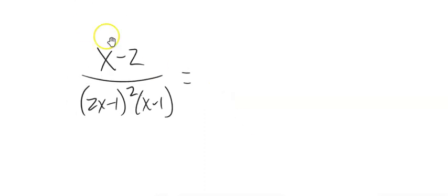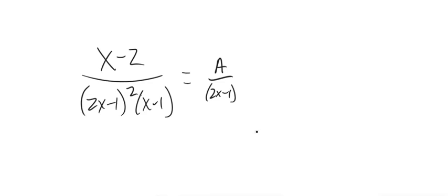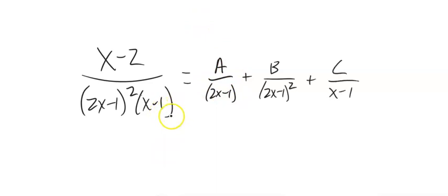There are two more cases to think about. One is what we call a repeated linear factor. Here we'd have x times 2x minus 1 squared. We have to account for the fact that 2x minus 1 appears twice. So we write this as three parts: a over 2x minus 1, plus b over 2x minus 1 squared, plus c over x minus 1.